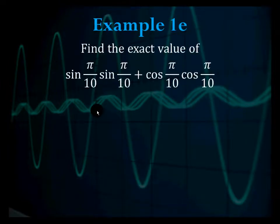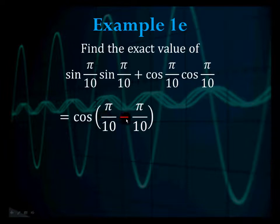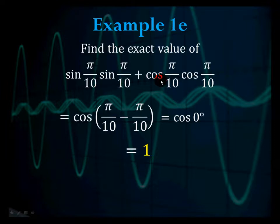Example 1e: find the exact value of sine(π/10) sine(π/10) plus cosine(π/10) cosine(π/10). Switching the order, you get cosine a cosine b plus sine a sine b, which is the pattern for cosine of a minus b. So this equals cosine of π/10 minus π/10, which is cosine of 0, and that equals 1. This also makes sense because it equals sine²(π/10) plus cosine²(π/10), which equals 1 by the Pythagorean identity.